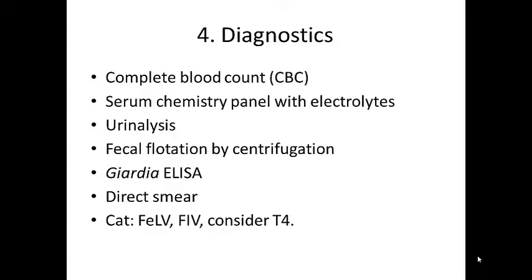If there are other pets in the household, you probably want to put contagious agents at the top of the list. The minimum database for a patient with diarrhea should include a CBC, serum chemistry panel, and urinalysis. This will help rule out extra-intestinal causes of diarrhea, assess the metabolic condition of the animal, determine whether it needs fluids, and whether the diarrhea is complicated by septicemia — which is why the CBC is crucial.